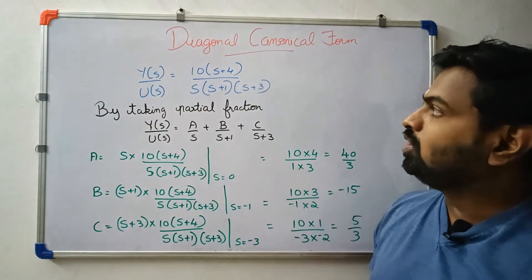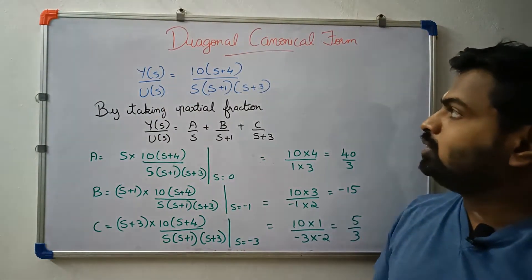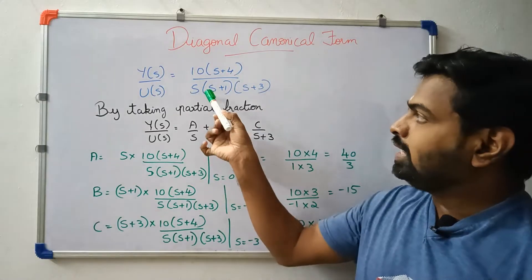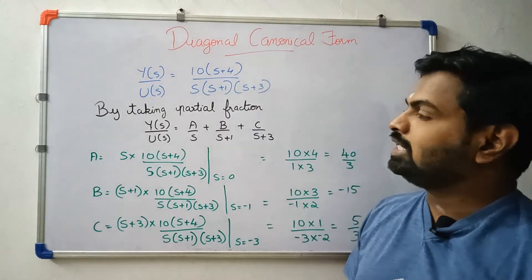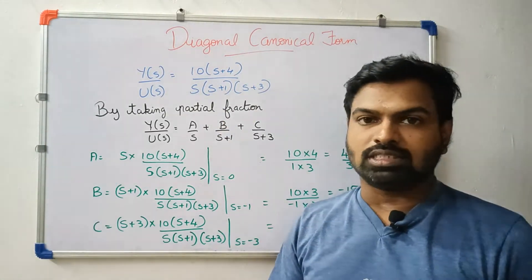Y(s) by U(s) is equal to 10 into (s plus 4) by s into (s plus 1) into (s plus 3). This is the transfer function.